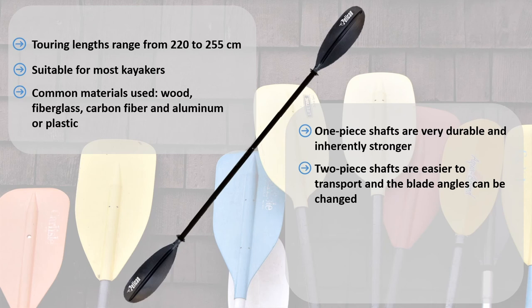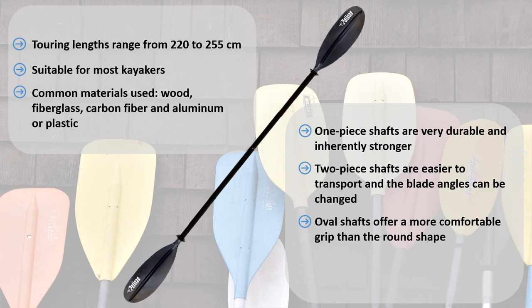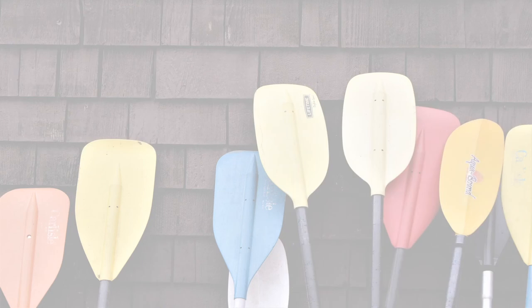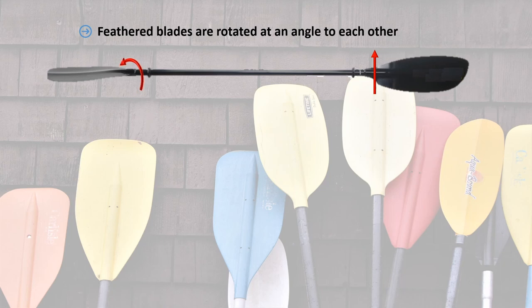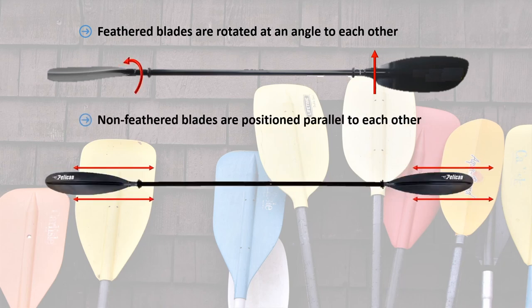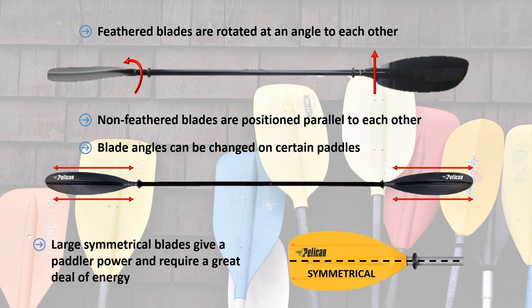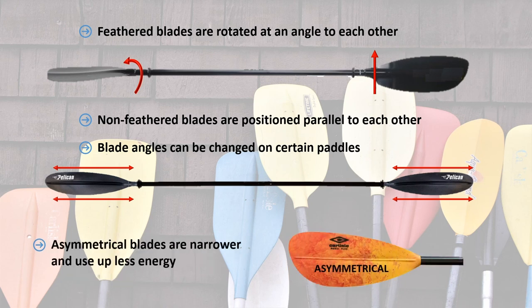Furthermore, shafts often come in two shapes: oval and round. Oval shafts offer a more comfortable grip than the traditional round shape. Some round shafts offer oval hand sections for a better grip — this is called oval indexing. Feathered blades are rotated at an angle to each other and reduce wind resistance. Non-feathered or matched blades are positioned parallel to each other. Note that the blade angles can be changed on certain paddles. Large symmetrical blades give a paddler power through quick, powerful bursts of acceleration, but require a great deal of energy. Asymmetrical blades are narrower but tolerate a more horizontal stroke, which uses up less energy — great for those who paddle for long periods of time.